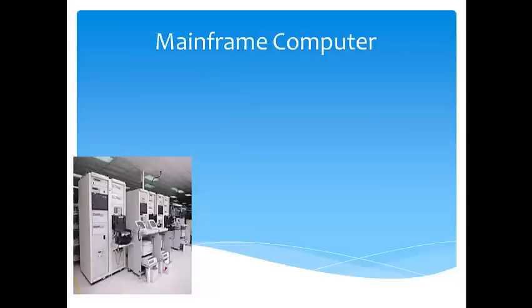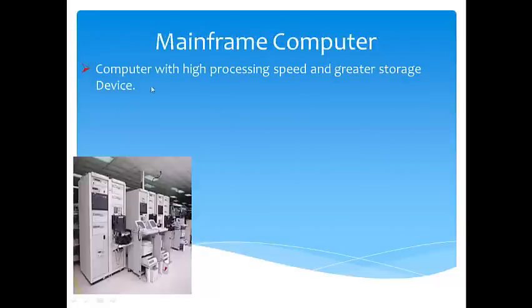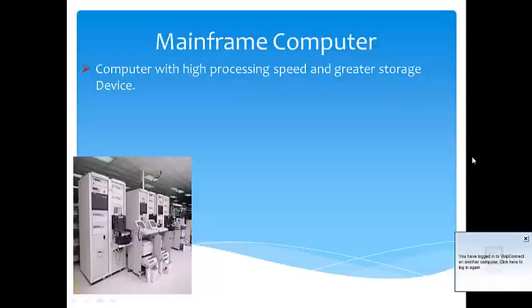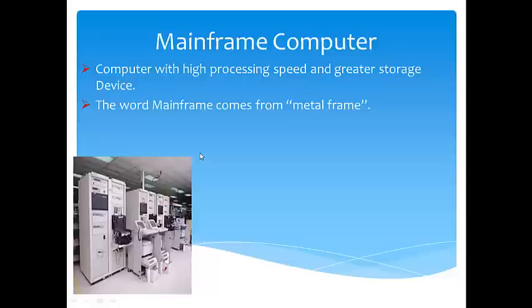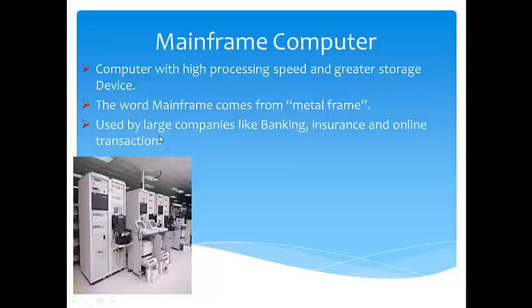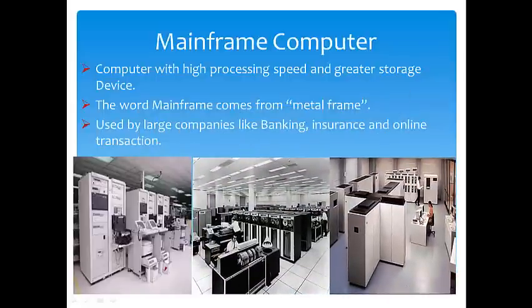First, the mainframe computer. These are very large computers. The term mainframe comes from the metal frame used in its construction — all parts were made of metal frame, which is why it is called mainframe. Mainframe computers have very high processing speed and great storage — they can store large amounts of data. They are used by large companies like banking sectors, insurance, and online transactions because of their great processing speed and storage.